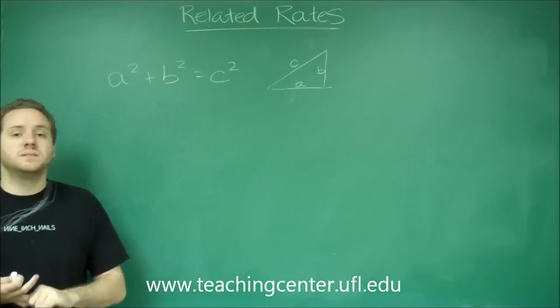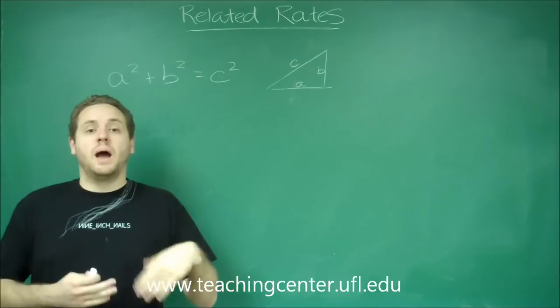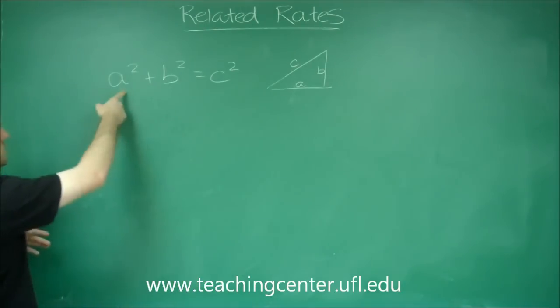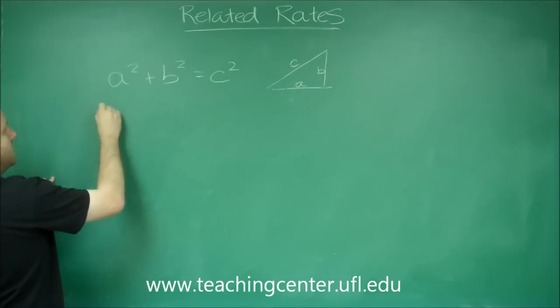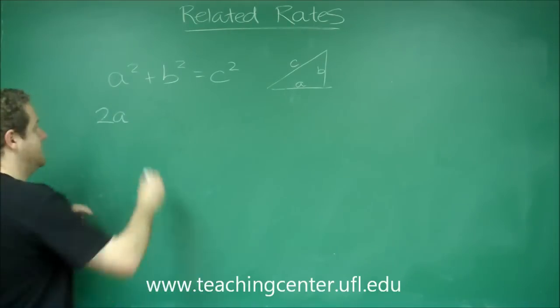So basically that's the same as implicit differentiation in that you're going to take the derivative the exact same way but you have to multiply by that extra derivative term. So when you do the derivative of A squared the derivative of A squared is 2A but you have to multiply by DA DT.